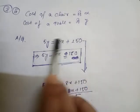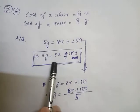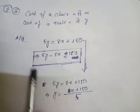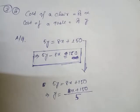This is our equation, and if I take 8x to the other side, it becomes minus. So, 5y minus 8x equals 150. This is the linear equation.